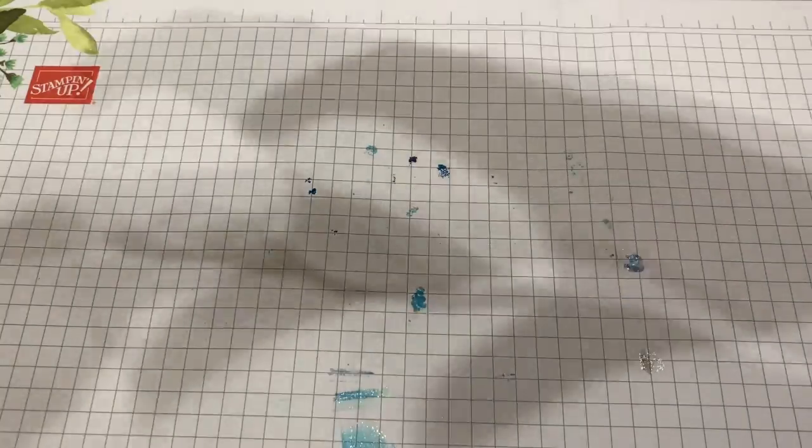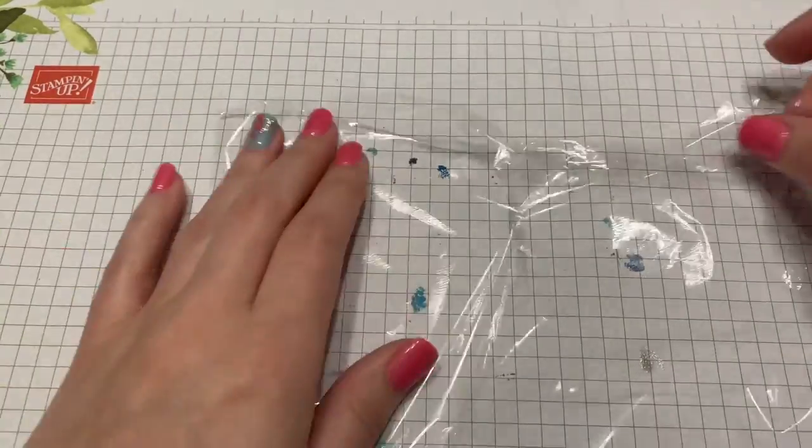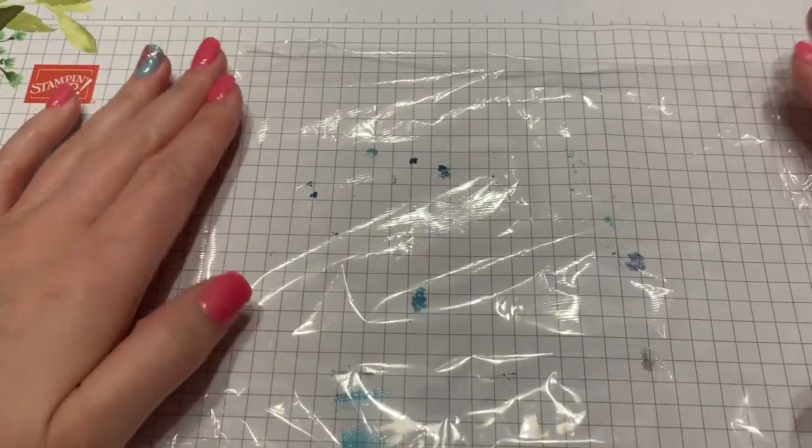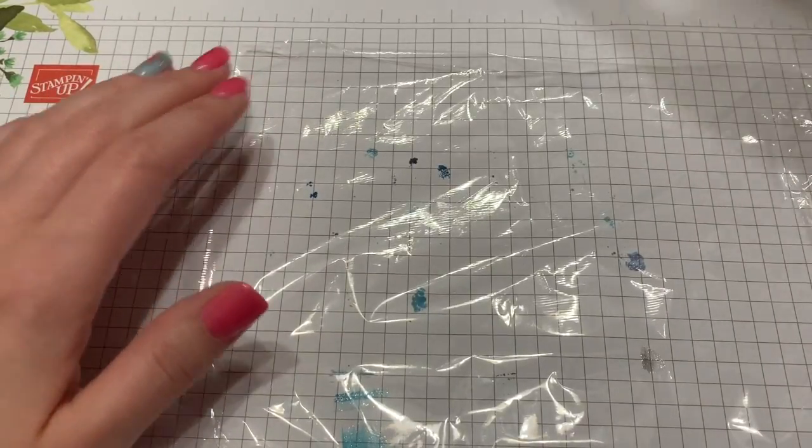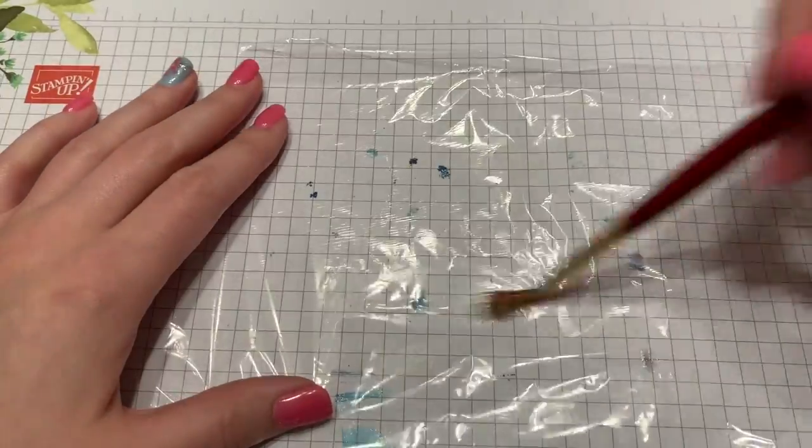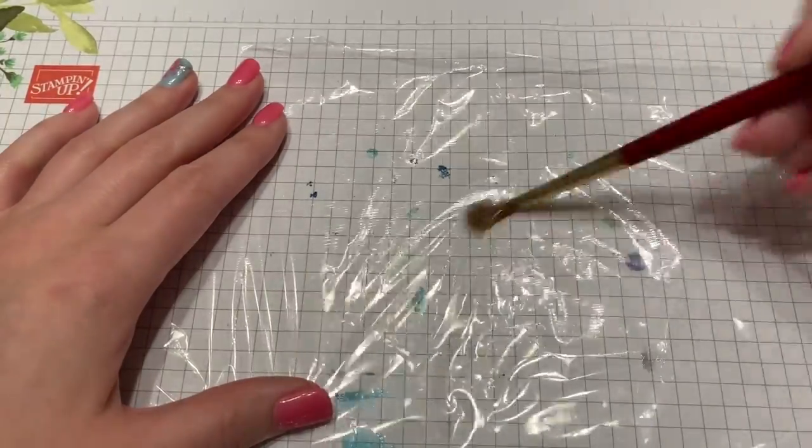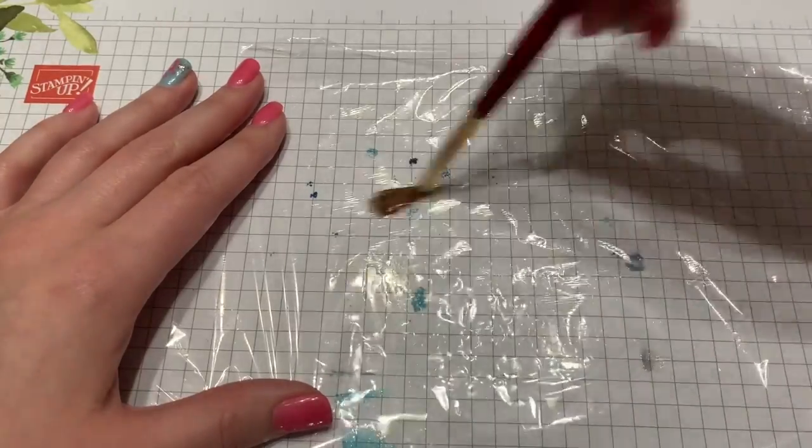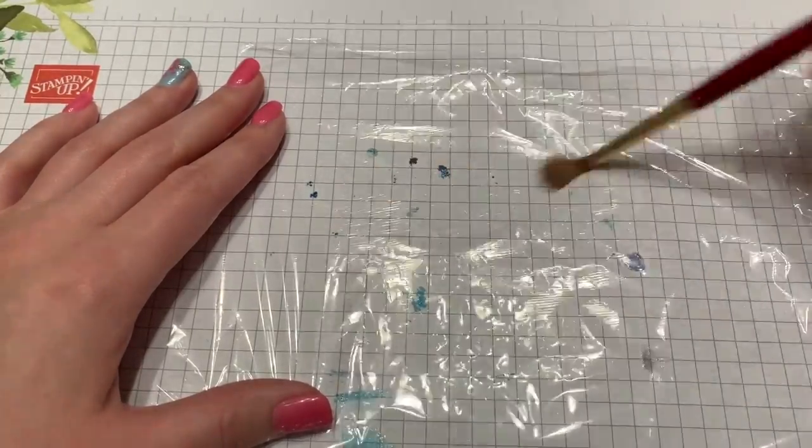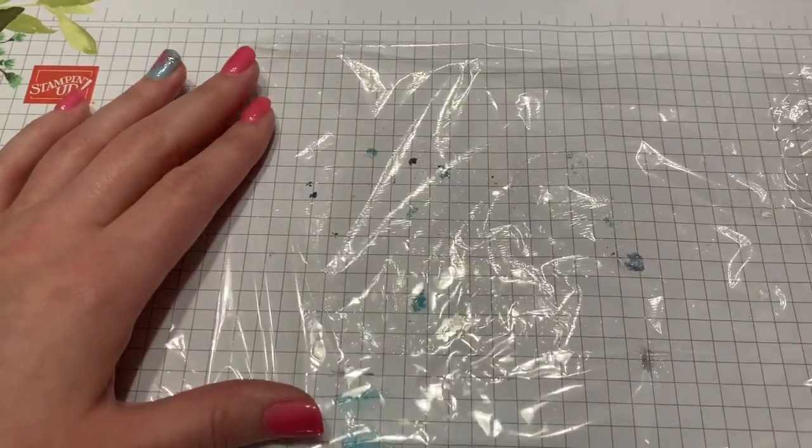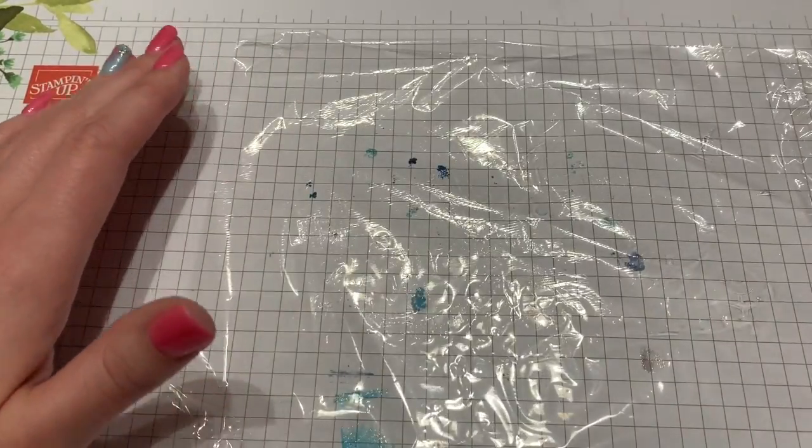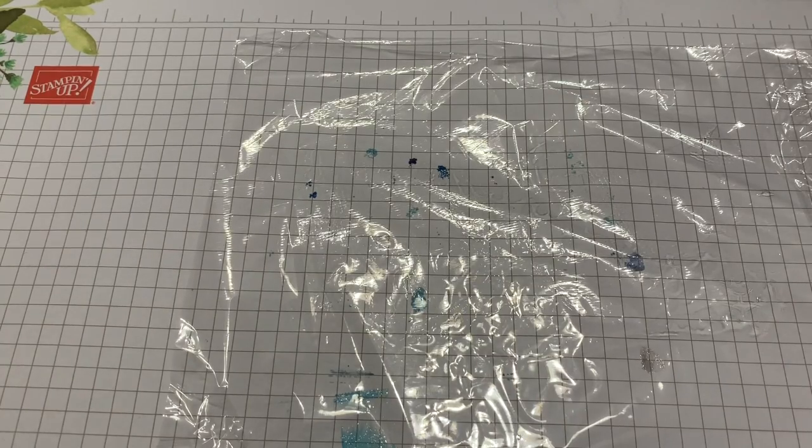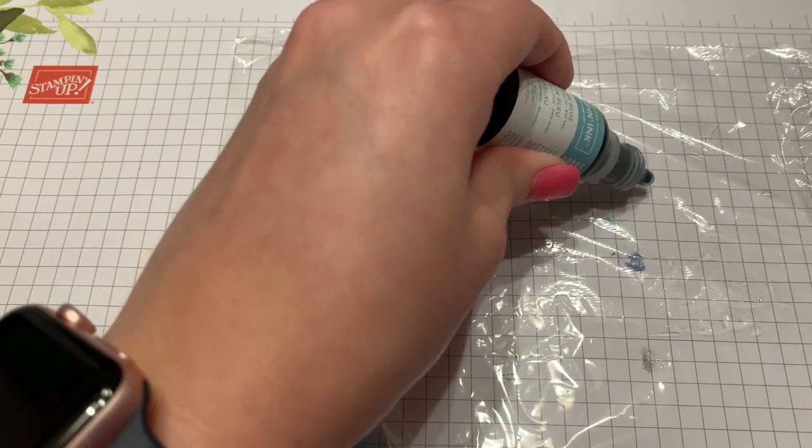We're going to do it one more time. This time I'm going to show you with the watercolor paper because it does give it something a little different. Again, we're going to start with our saran wrap and get it wet. If you don't happen to have a paintbrush and you have one of those Stampin' Spritz misters, that's perfect for this. I just didn't have one, and I like to have a little more control. I'm a little bit of a control freak. Then we're going to put our ink back on again, Balmy Blue first.